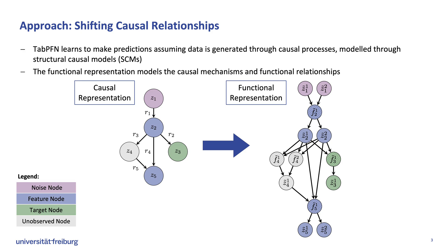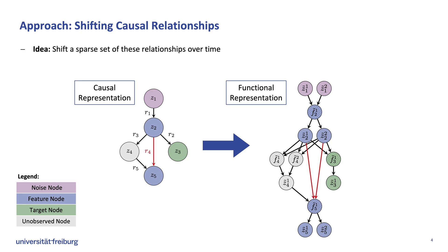To sample the datasets, a generated SCM is expanded into a functional representation, modeling the assignment functions of the causal representation. We would like to adapt the prior of Tab PFN to generate datasets that are subject to temporal distribution shifts. For this, we select a subset of these causal relationships to shift over time while instances in a dataset are generated.